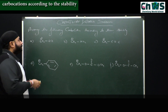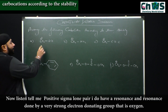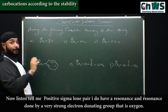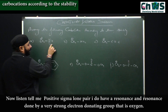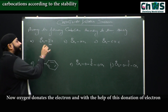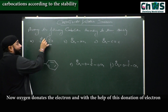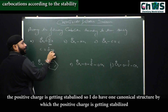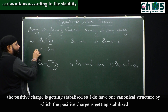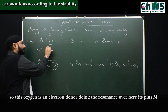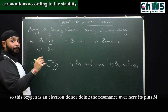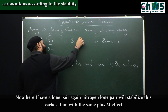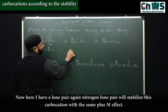Now listen — positive sigma lone pair. I have a resonance done by a very strong electron donating group, that is oxygen. Oxygen donates the electron and with the help of this donation, the positive charge is getting stabilized. I get one canonical structure by which the positive charge is stabilized — this oxygen is the electron donor doing resonance, it's a +M effect. Similarly, nitrogen lone pair will stabilize this carbocation with the same +M effect.